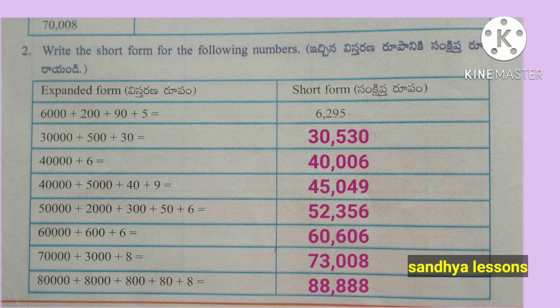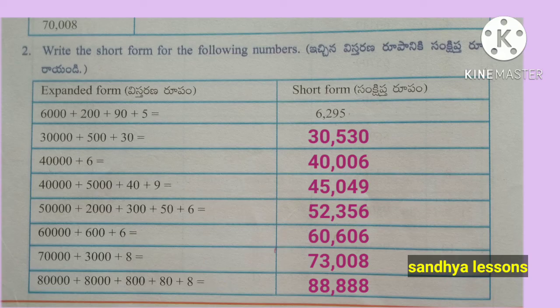Second: Write the short form for the following numbers. 50,000 + 2,000 + 300 + 50 + 6 = 52,356. 60,000 + 600 + 6 = 60,606. 70,000 + 3,000 + 8 = 73,008. 80,000 + 8,000 + 800 + 80 + 8 = 88,888.